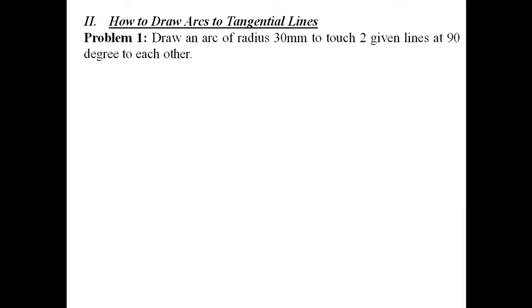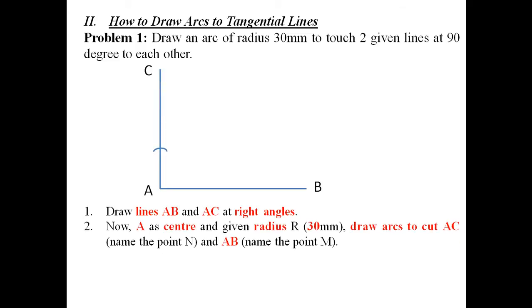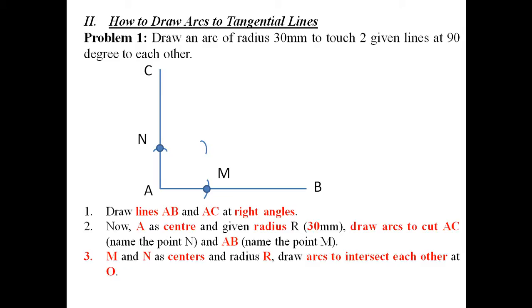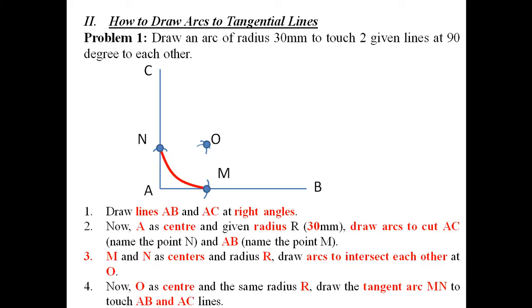The next problem is how to draw arcs tangential to lines. The problem is to draw an arc of radius 30 mm to touch two given lines at 90 degrees to each other. First draw two lines AB and AC at right angles. With A as center and given radius 30 mm, draw arcs to intersect each other at O. Then with the same radius of 30 mm and O as center, draw the tangent arc M to touch lines AB and AC.